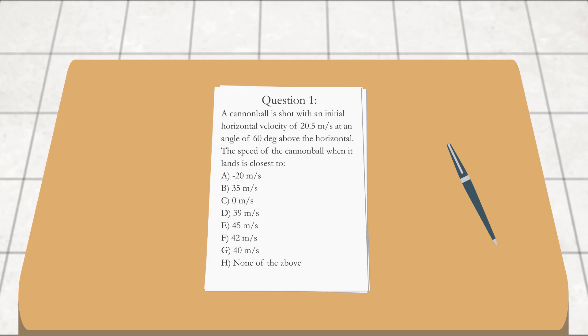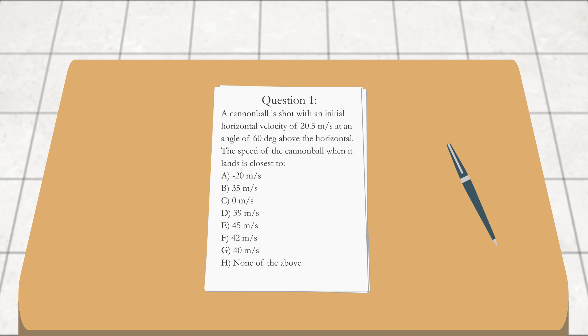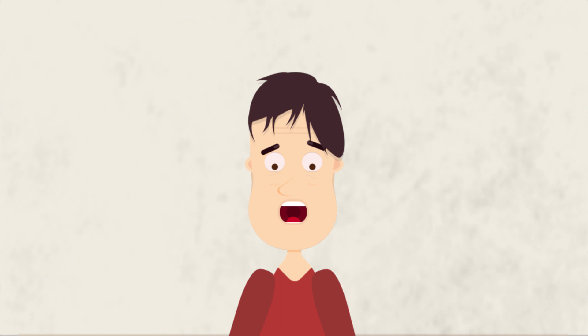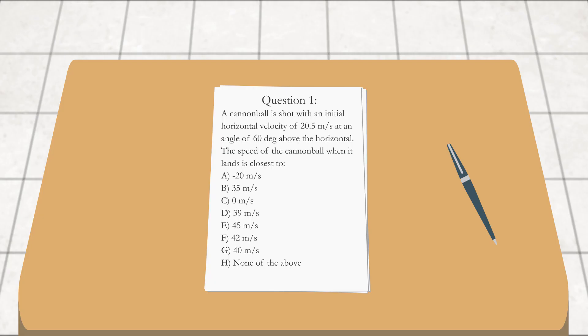All right, so the first question. Oh my god, it's multiple choice A through H and it's physics. A cannonball is shot with an initial horizontal velocity of 20.5 meters per second at an angle of 60 degrees above the horizontal. The speed of the cannonball when it lands is closest to A through H.